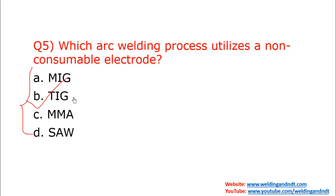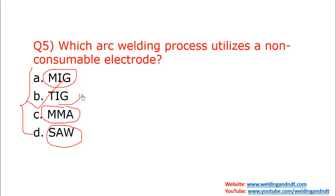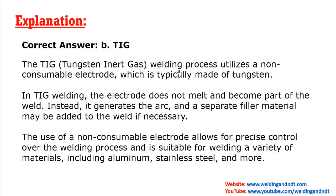In other processes like MIG welding, the filler wire itself acts as an electrode. In MMA or SMAW and submerged arc welding, the electrode itself acts as a filler wire. Whereas in TIG welding, the electrode only generates the arc. If filler metal is required, it is supplied separately. Hence the correct answer is TIG — the TIG welding or tungsten inert gas welding process utilizes a non-consumable electrode.